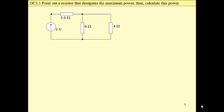A combination of three resistors is connected to a voltage source. Our task is to point out a resistor that dissipates the maximum power and then calculate this power.